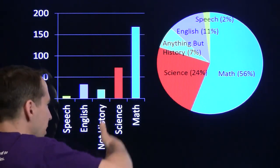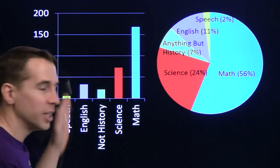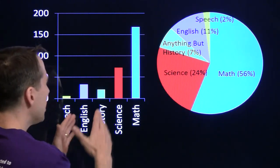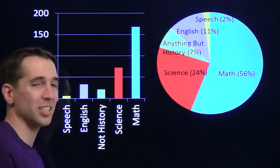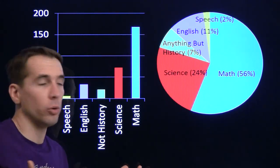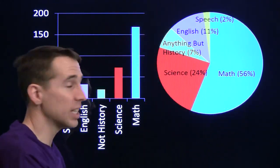We can see math was the best, science is the next best, then English, then not history, and then speech. But we can't see very easily what the proportion of a whole is. We can't see that science actually is about a quarter of the total. The pie chart tells us that right at a glance. We see a little quarter pie slice, we know that science is around a quarter of the total.